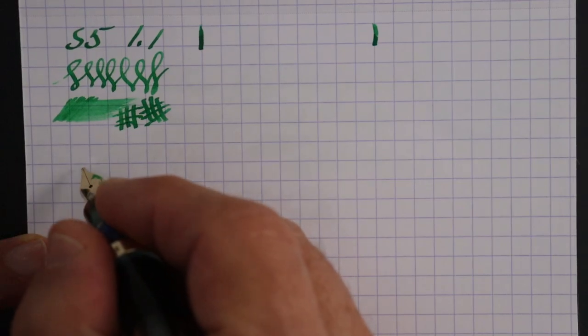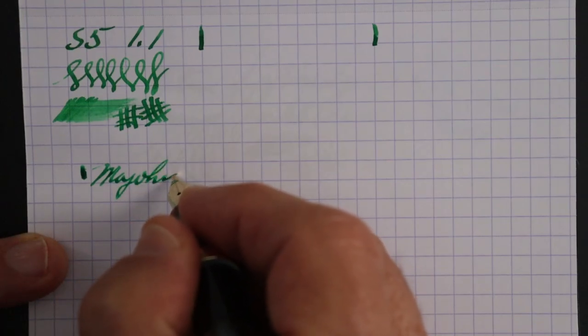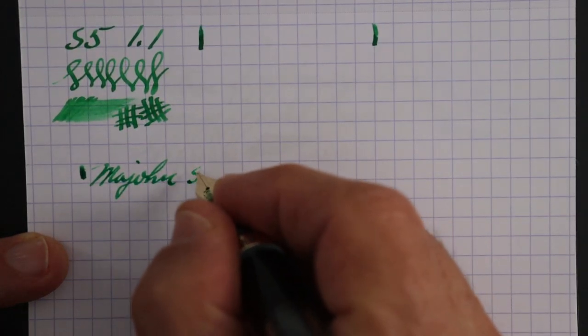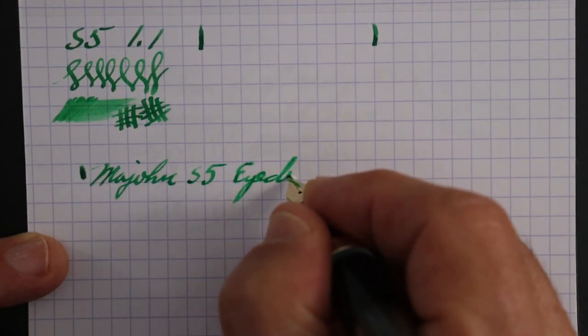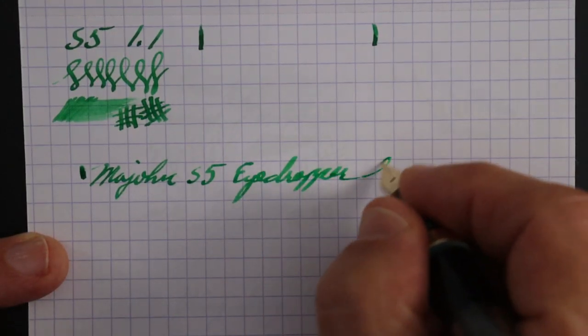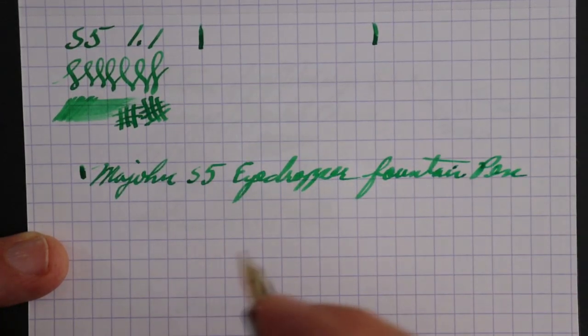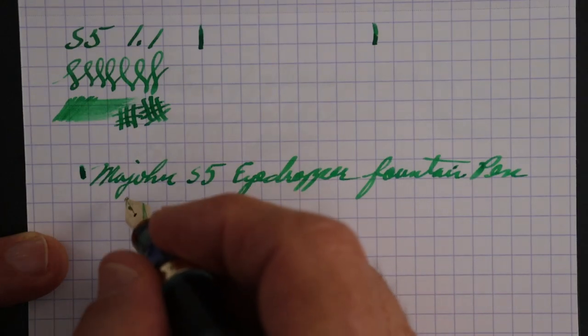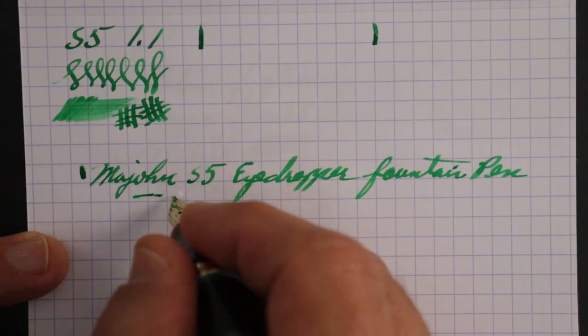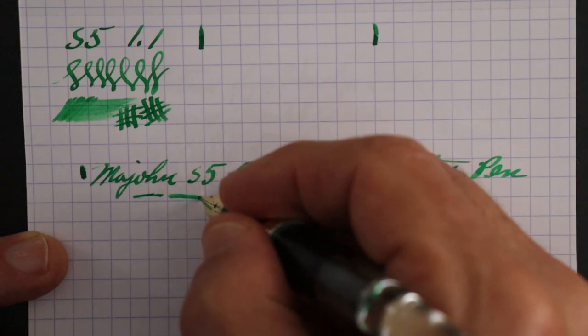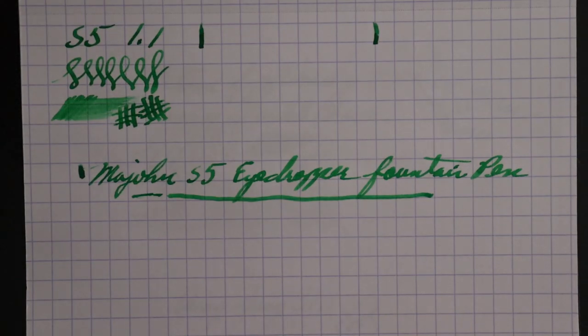So this, no hard start because I've had it out. Mahjong S5, eyedropper fountain pen. And I'll just make a... doesn't want to write like that, there's a sweet spot in this. Come across like that. All right, so I'm going to pause it here and I'm going to change nibs.